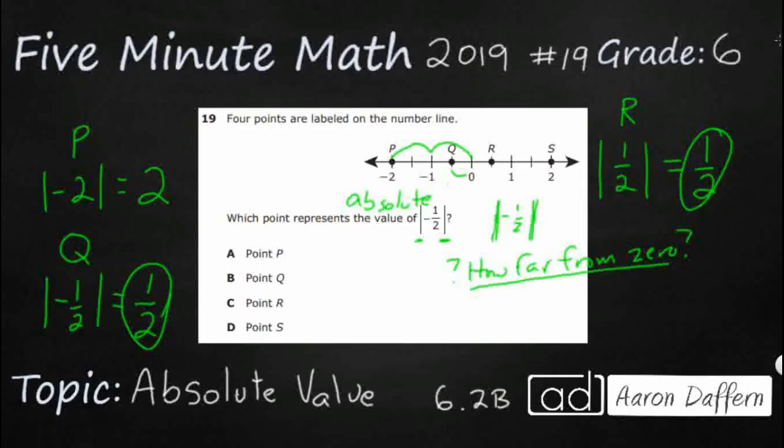Because look, these two right here are mirrors. If zero is my mirror, they are the exact same distance away. We're going to find the same thing with P and S.